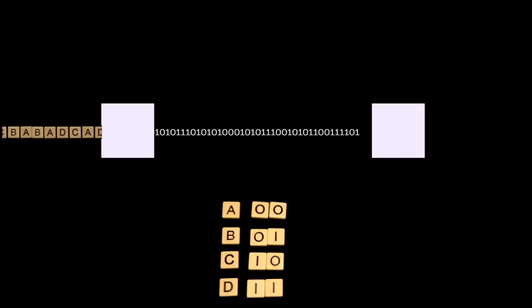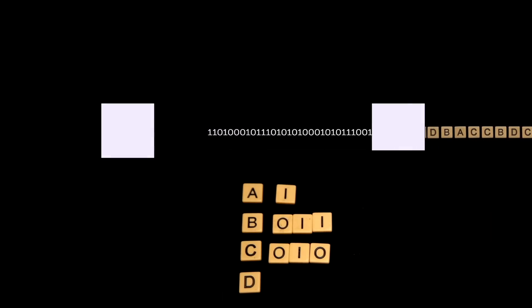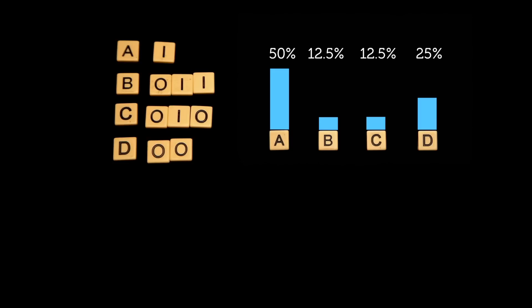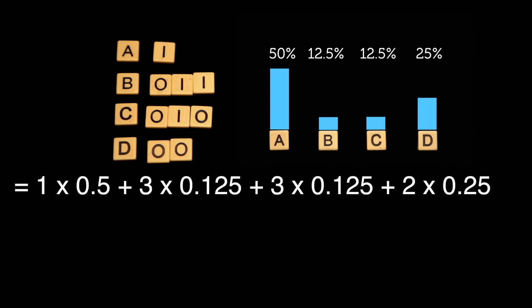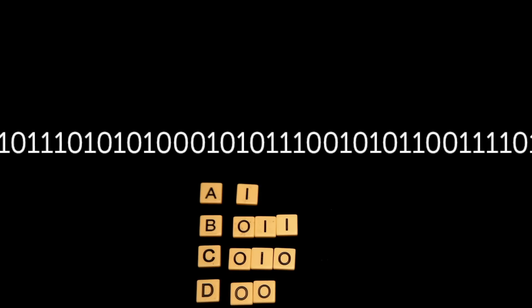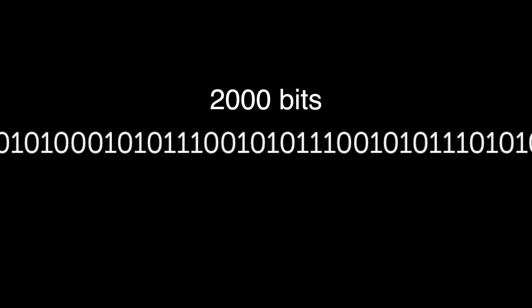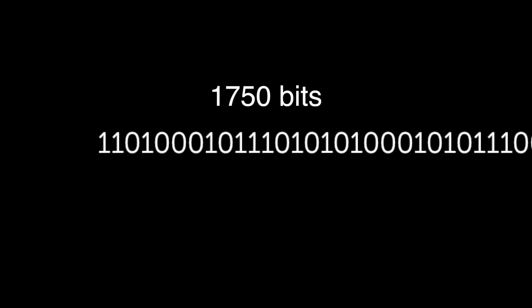Now how far does this compress the message compared to the original 2,000 bits? Well, we just need to calculate the number of bits per letter on average. So we multiply the length of each code times the probability of occurrence and add them together, which results in an average length of 1.75 bits per symbol. That means with this Huffman coding, we can expect to compress the messages from 2,000 bits to 1,750 bits.